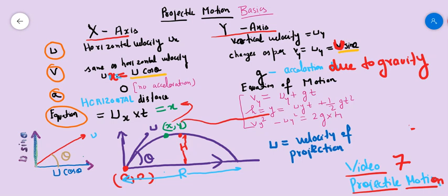So the second important point about the y-axis is there is an acceleration which is g, the acceleration due to gravity.